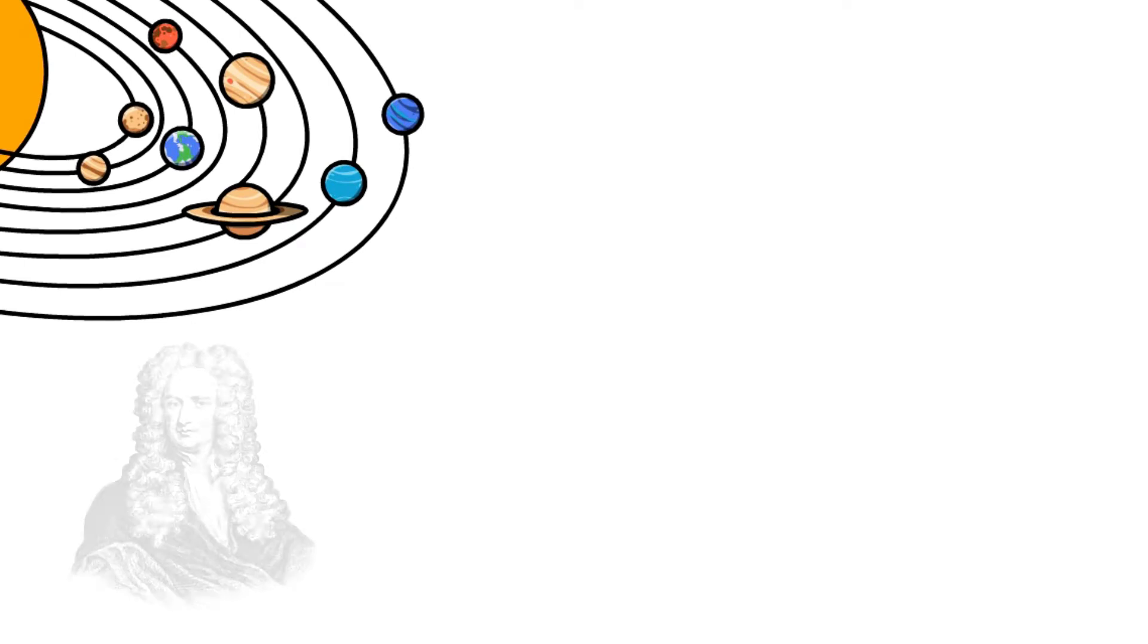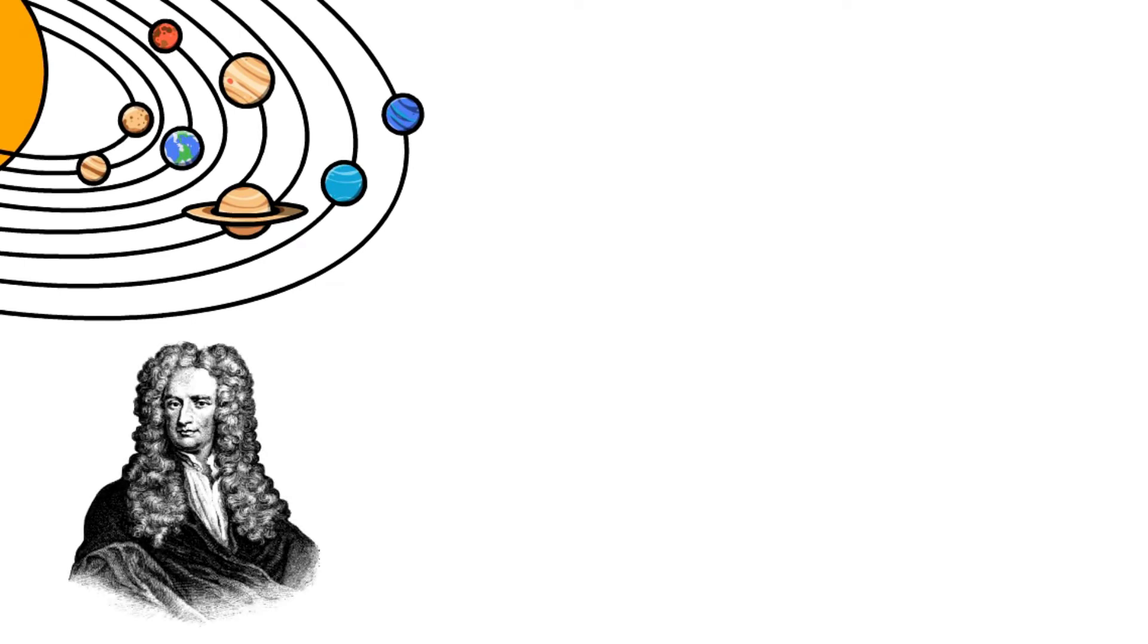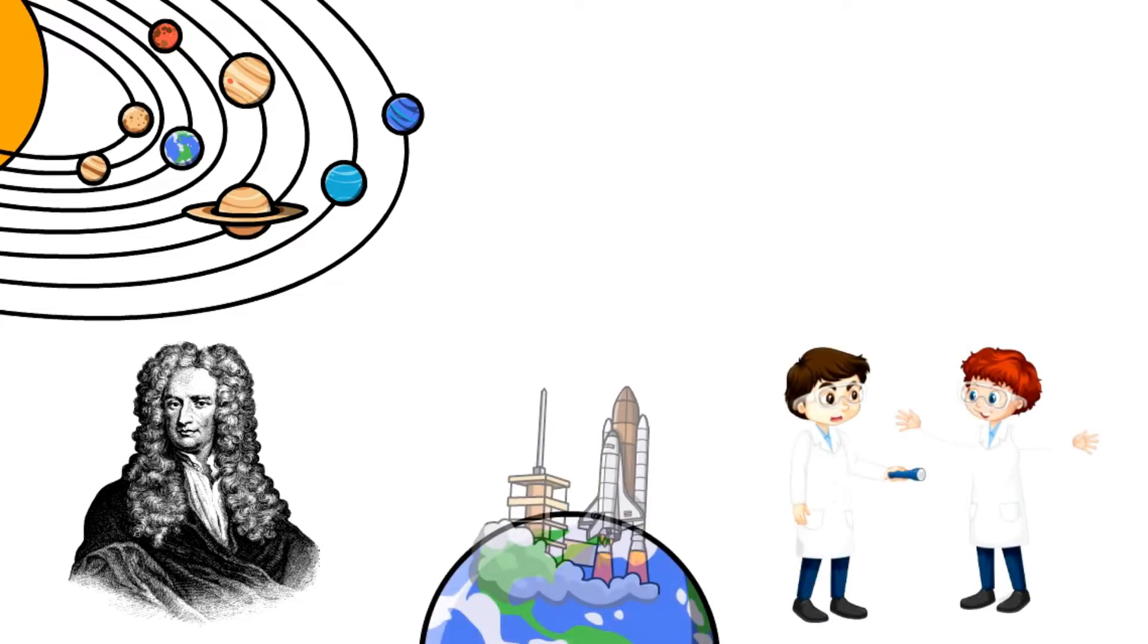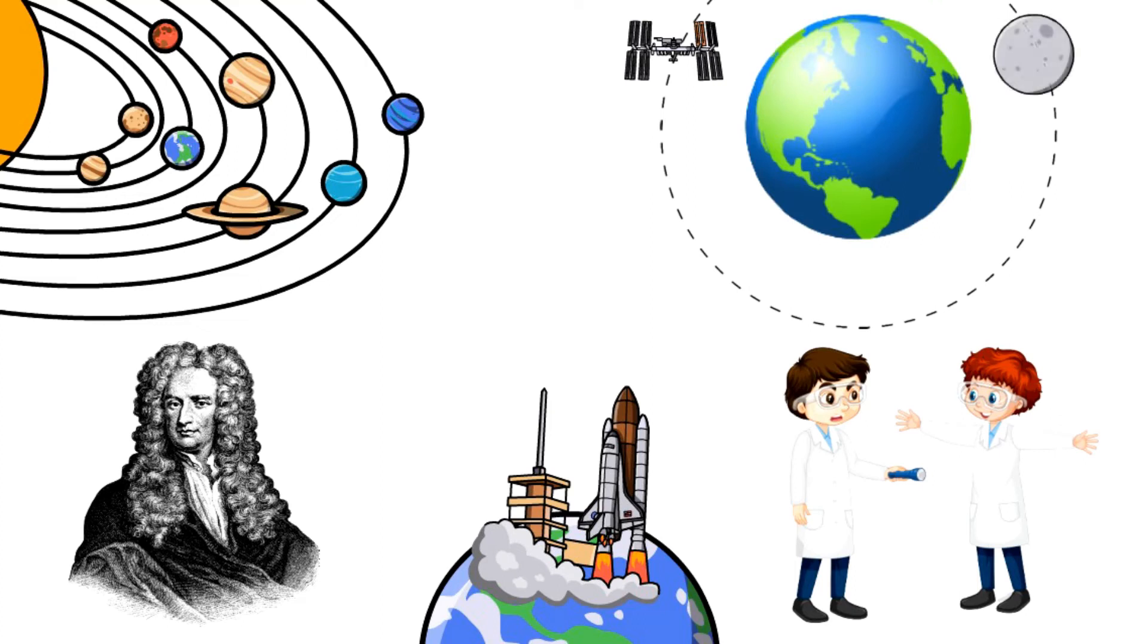As we discussed earlier, the motion of various planets or satellites can be determined by Newton's law of motion and Newton's law of gravitation. From this, scientists believe that if any object launched from Earth can be given the proper speed at the proper distance from Earth, then the object will orbit Earth, like the moon.